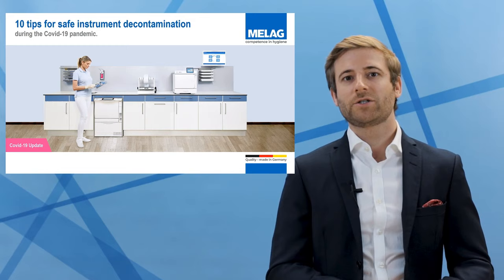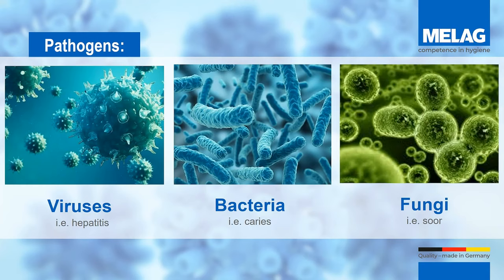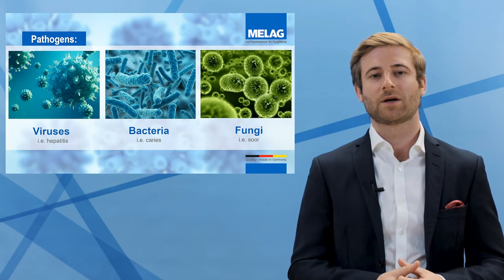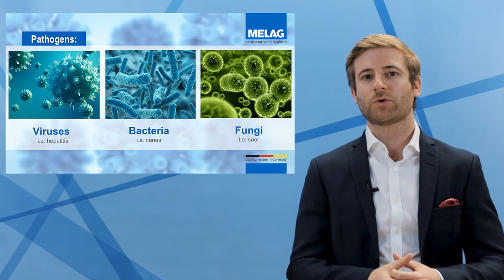Let's start with the basics. Pathogens, or harmful microorganisms, can be grouped into three classes: different kinds of fungi, bacteria, and viruses. In our daily lives we are surrounded by billions of harmless microorganisms which are also essential for our organisms and our bodies to work. On the other hand, we are also surrounded by countless harmful microorganisms which can lead to diseases such as caries or hepatitis.